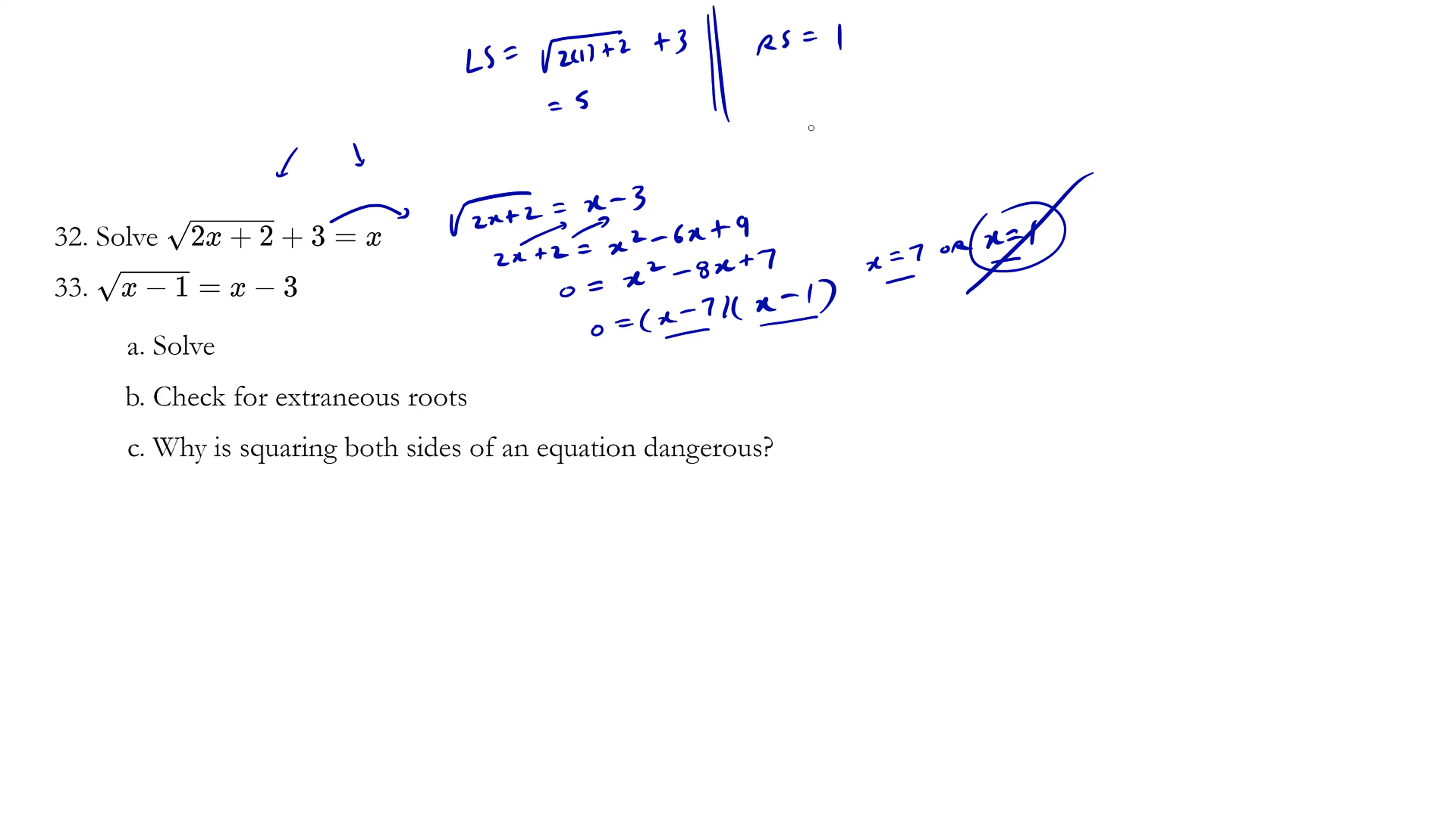Let's try x equals 7. Left side equals √(2 times 7 + 2) + 3. So we have 14 plus 2 is 16. The square root of 16 is 4. 4 plus 3 is 7. And the right side is also simply x which is 7. Left side equals right side. So therefore, this is a valid root. And why don't we visualize it?